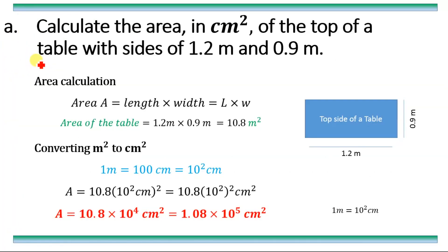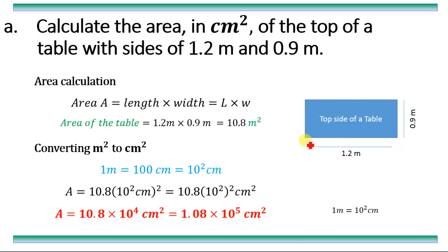Numerical number one: calculate the area in centimeter square of the top of a table with sides of 1.2 meters and 0.9 meters. Let's consider this as the top of a table. The length of one side is 1.2 meters while the length of the second side is 0.9 meters.